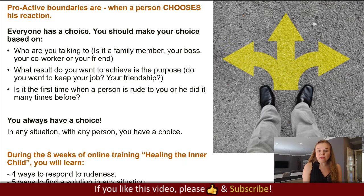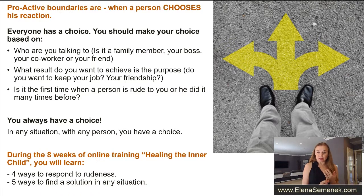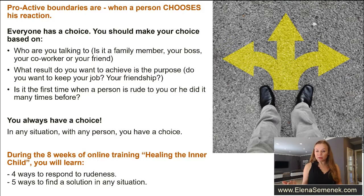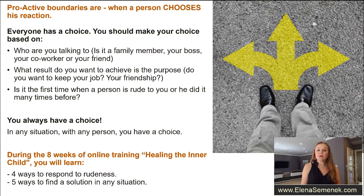The second type of boundaries is proactive boundaries. Proactive boundaries are when a person chooses their reaction. Everybody has a choice, and often we forget about it. You should make your choice based on who you are, who you are talking to — is it a family member, your boss, a co-worker, or a neighbor? You should make your choice based on the result you want to achieve. Do you want to keep your job, your friendship, your family relationship? And consider: is this the first time this person is rude to you, or has it happened many times before?